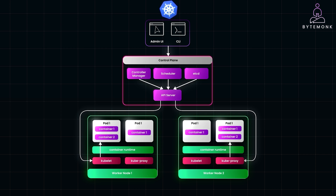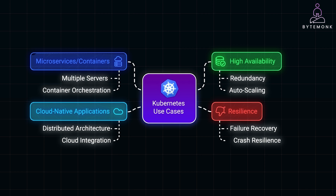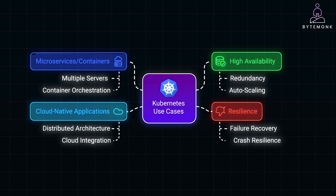Services ensure that even if a pod moves or restarts, your apps stay connected. So when should you use Kubernetes? It's perfect when you have too many microservices or containers running across multiple servers and you need high availability, redundancy, and auto-scaling. Your application might also need to be resilient to failures and crashes, and you are working with cloud-native applications or have a distributed architecture.